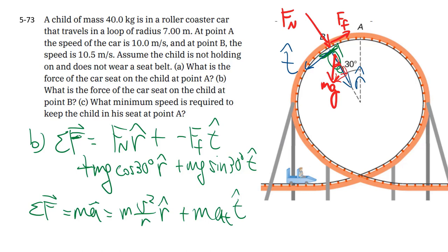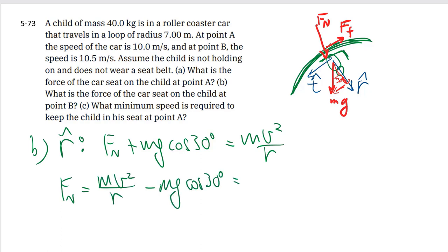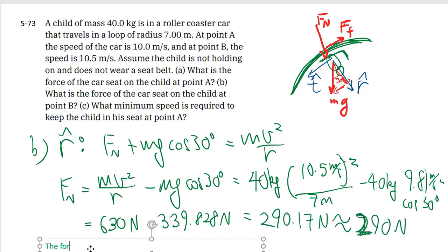Due to the tangential component of gravity there, mostly we're focused on finding Fn. So we basically just look at the radial component. You have Fn plus Mg cosine 30 degrees gives you M times V squared over R. We're rearranging to solve for Fn. We plug in the numbers. In this case, we're a little past the top, so we sped up a little bit. They give us that speed, 10.5. And don't forget the cosine 30 term. So calculator work later, roughly 290 newtons.